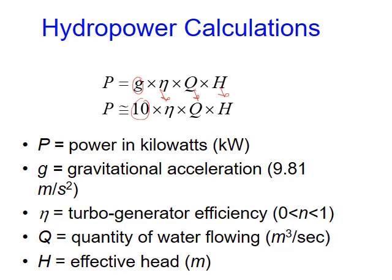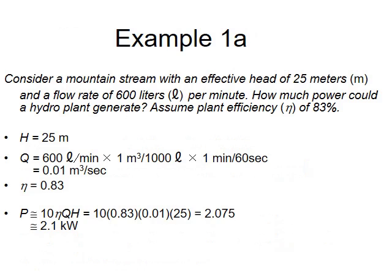Let's take an example. Consider a mountain stream with an effective head of 25 meters and a flow rate of 600 liters per minute. How much power could the hydro plant generate? Assume the efficiency is 83%.